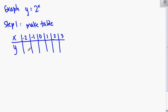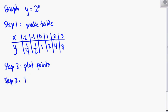2 to the negative 2 power. Well, that's 1 over 4. Then we have 1 over 2. 2 to the 0 is 1. 2 to the 1st is 2. 4, 8. All things that we talked about last chapter. Step 2 is going to be plotting your points. And step 3 is going to be to draw your curve. They call it a smooth curve in your book. Just draw a curve.